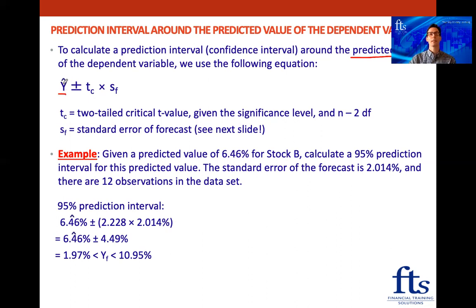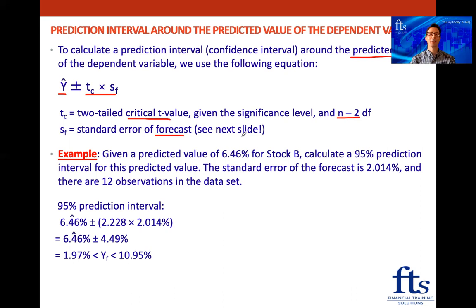Our Ŷ is our predicted value — the 6.46%. Then we subtract and add a term: our Tc, which is the two-tailed critical t-value at whatever significance level they give us, with n minus 2 degrees of freedom, multiplied by Sf — the standard error of forecast. We'll look at that formula on the next slide. You might be surprised by it, but we don't have to worry about calculating it.